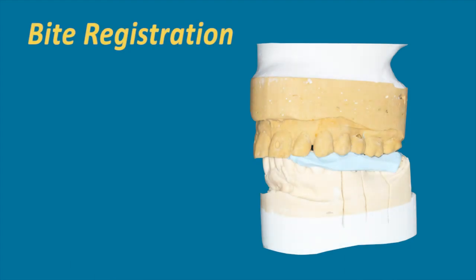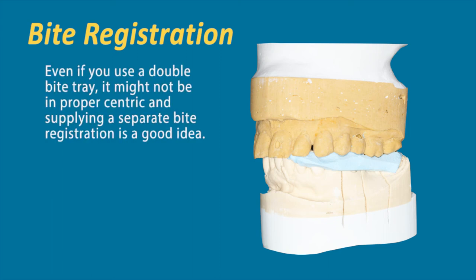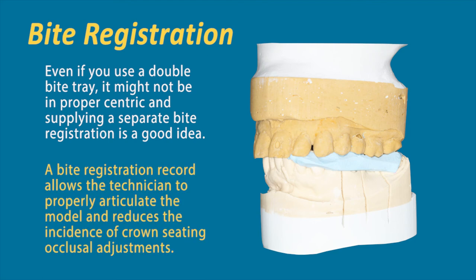Let's talk more about the bite registration. Even if you use a double or dual arch tray system, it still might not be in centric—the patient might have shifted. With all that impression material in the tray in the patient's mouth when they bite down, if they do a slight side shift, it's really, really difficult to see that physically. The bite registration allows the technician to properly articulate the model, reducing the incidence of crowns not seating and occlusal adjustments. Every case that we get at the laboratory, we always recommend that second piece of data to make sure we're articulating our casts properly.